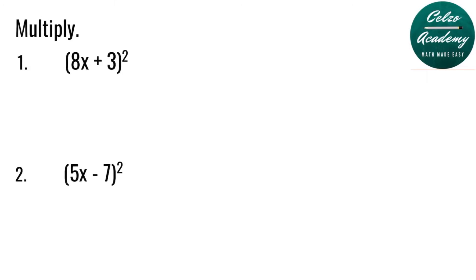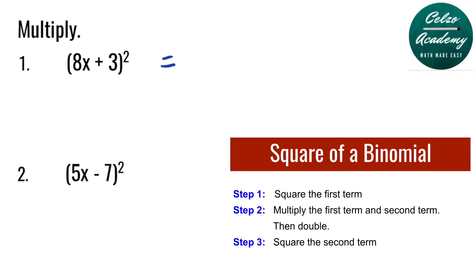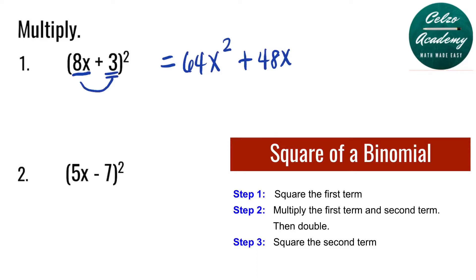Question number 1: 8x plus 3, to the second power. Step 1 is to square the first term, which is 8x times 8x, and that is 64x squared. Step 2: Multiply the first and the second, and then double. 8x times 3 is 24x; doubling 24x gives you 48x. Step 3: Square the second term — 3 squared is 9. So the answer for number 1 is 64x squared plus 48x plus 9.